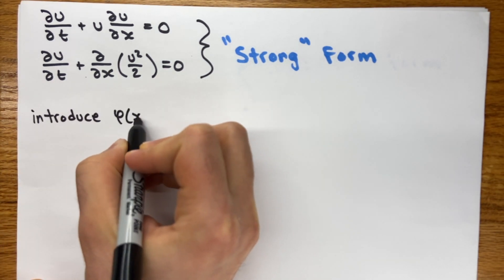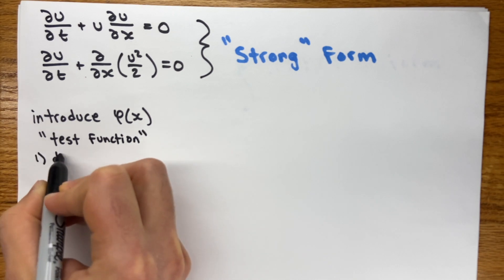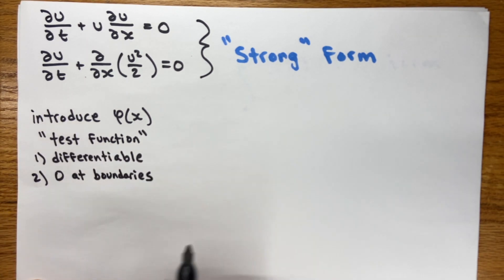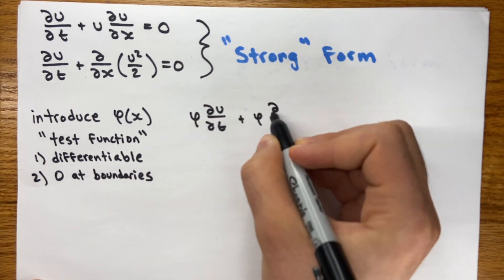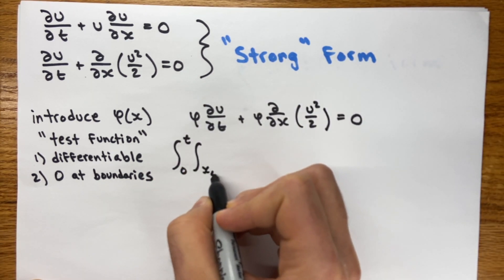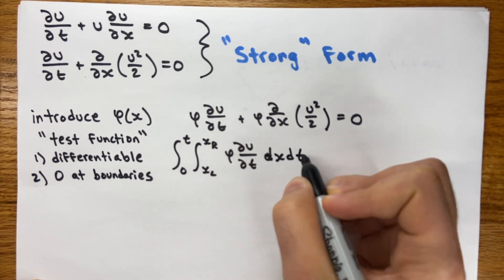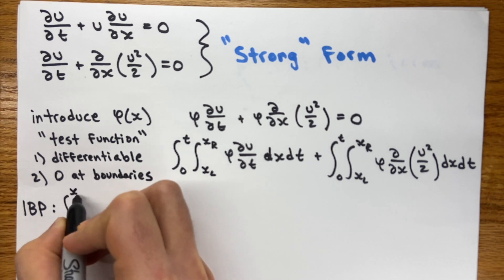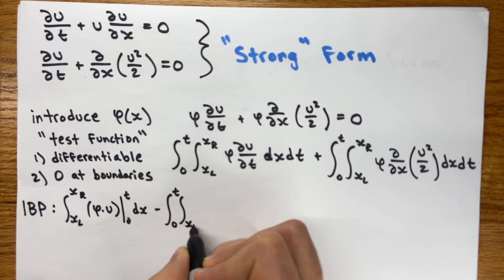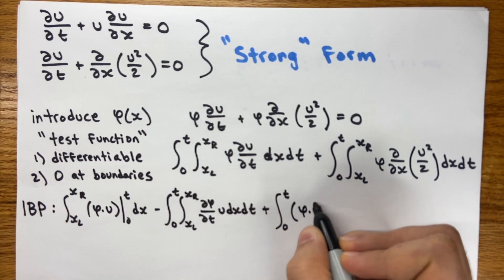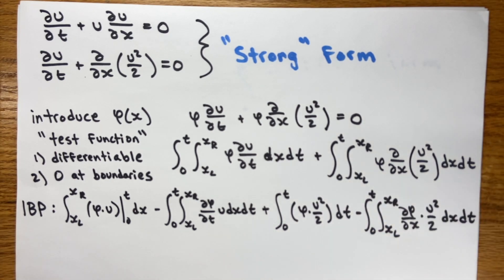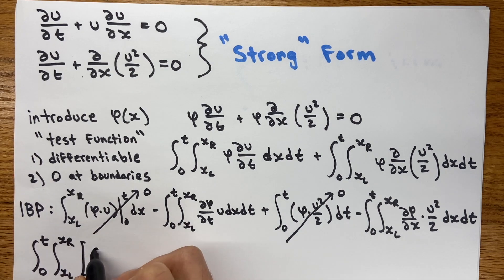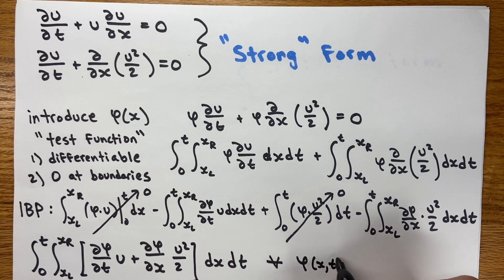We multiply the entire equation by what's called a test function. A test function is just an arbitrary function that we can differentiate, and that is zero at the boundaries. We start by multiplying the conservative form of the PDE by the test function. Then we integrate both sides in both space and time. The reason we do this is so that we can use integration by parts to transfer the derivative from U to the test function. And because the test function is zero at the boundaries, we can get rid of those boundary terms, and we're left with what we call the weak form of the PDE.